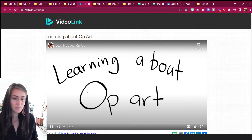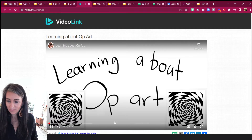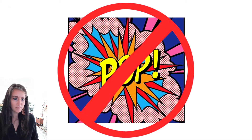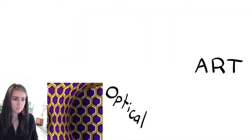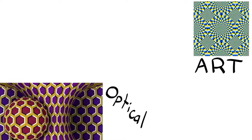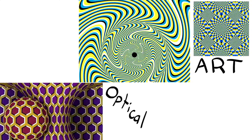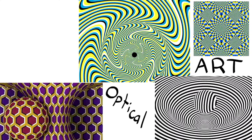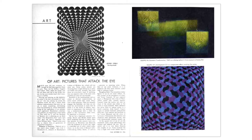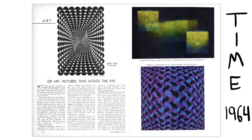Let's learn about op art — not to be confused with pop art. Op art stands for optical art, art that uses optical illusions. These are pieces that trick the brain into thinking something is happening that couldn't really happen in real life. The name op art was coined by Time magazine in 1964.